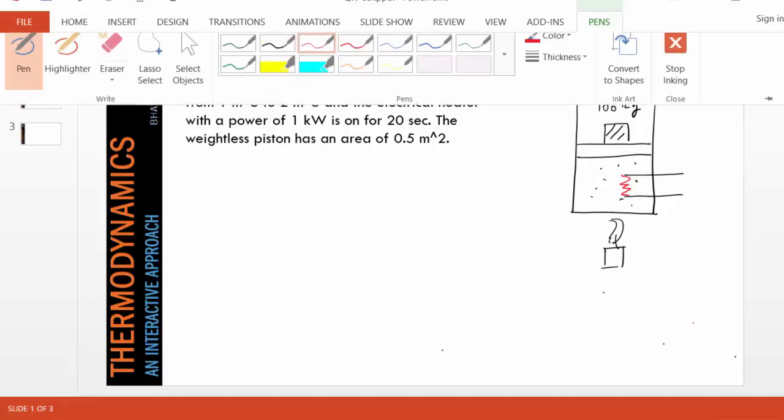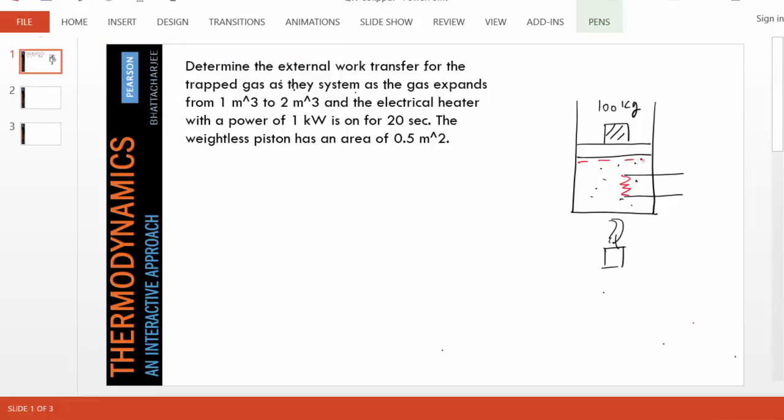This is my system and we are supposed to find the external work transfer. Obviously we see heat transfer happening here, and the electrical resistance even though you can be tempted to say it's heating the gas so this must be heat transfer, but notice if you look at the boundary it's electricity that's crossing the boundary, so therefore it must be work transfer. We can detect there is electrical work transfer at the boundary, and of course as the gas expands there is a boundary work transfer.